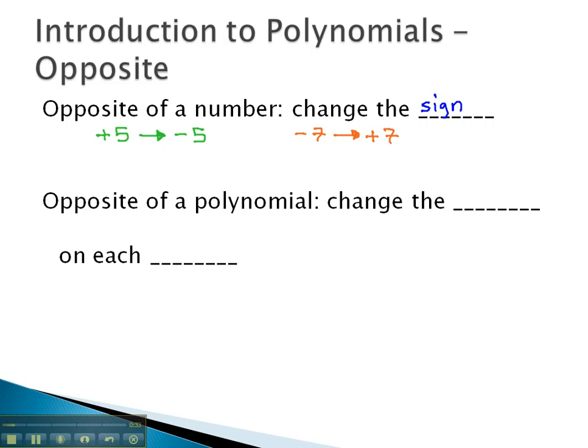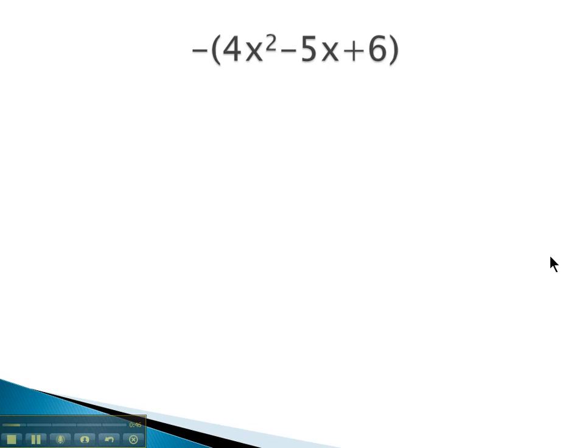As you might expect, the opposite of a polynomial changes the sign on each term. So let's take a look at some examples where we change the sign of each term on a polynomial.